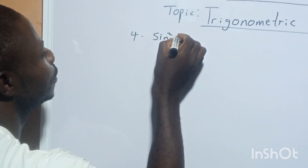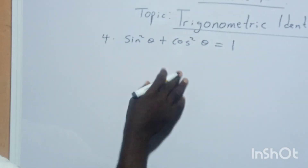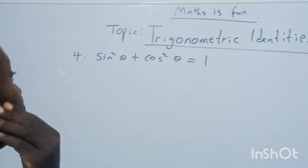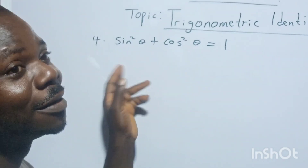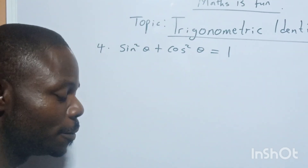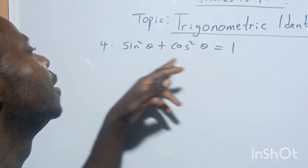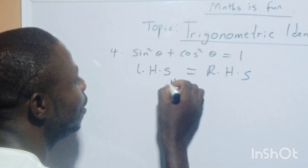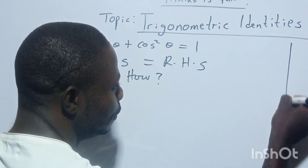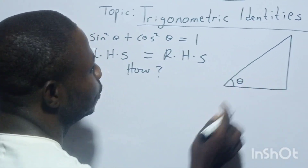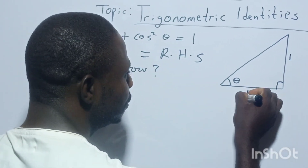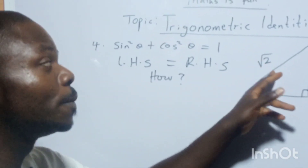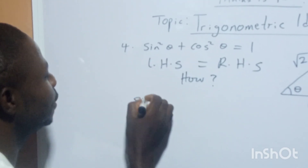Number four: sin²θ + cos²θ is equal to one. Now look at this expression. Remember, we are dealing with an identity — a unique expression that you can use to solve another one. Especially for those of you in architectural engineering and mechanical engineering, please don't joke with this particular problem. I told you that an algebraic equation is an expression that has an equal sign — the left-hand side is equal to the right-hand side. But this equals one. How can we do that? Sine squared θ is equal to what?